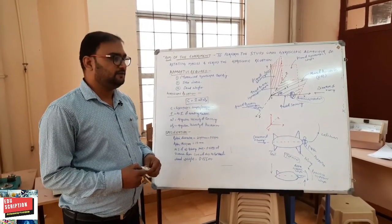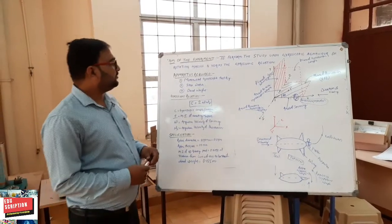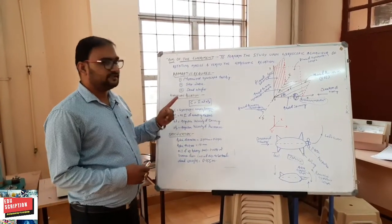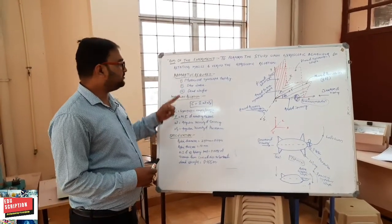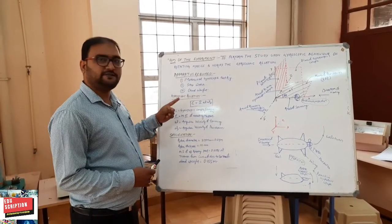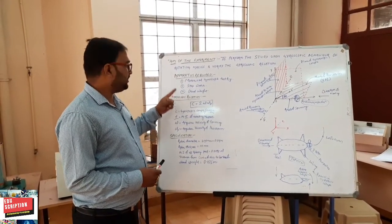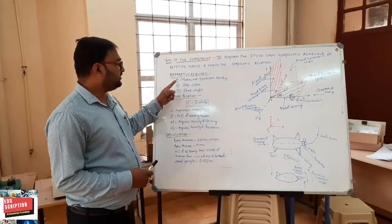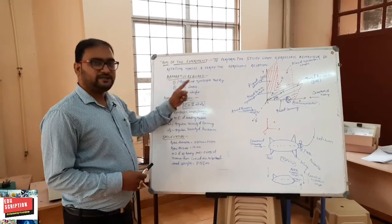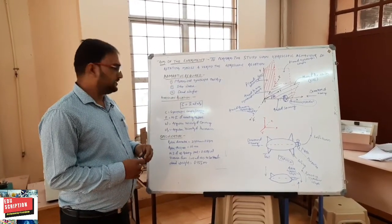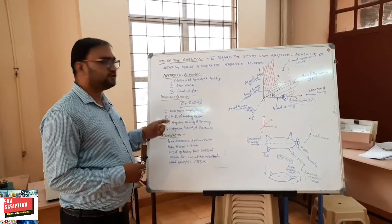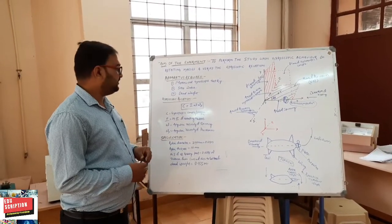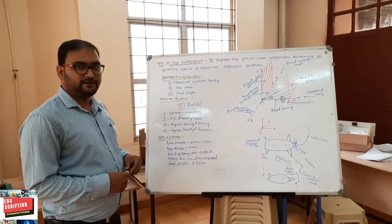Whenever we are going to perform this experiment, what are the apparatus required? The apparatus are: motorized gyroscope test rig, stopwatch, and dead weight.